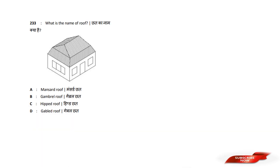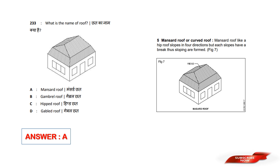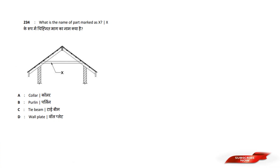What is the name of this roof? Options are: A) One side roof, B) Gravel roof, C) Gable roof. Answer option A — it is a Mansard roof.